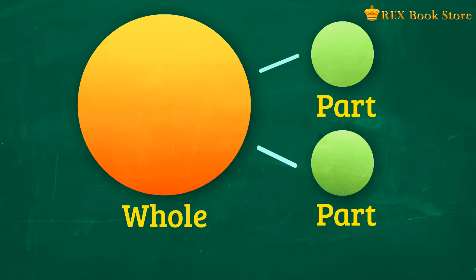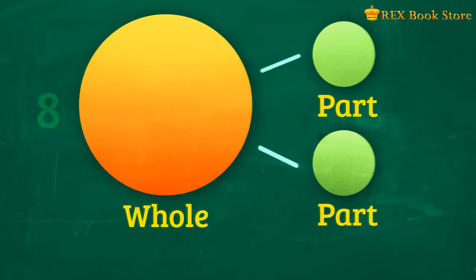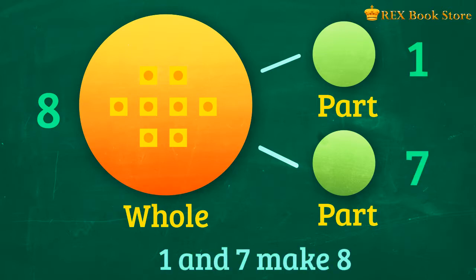Let's have another example. If there are 8 blocks, what number bonds can we make? There's 1 and 7. 1 and 7 make 8. Can you name other combinations?